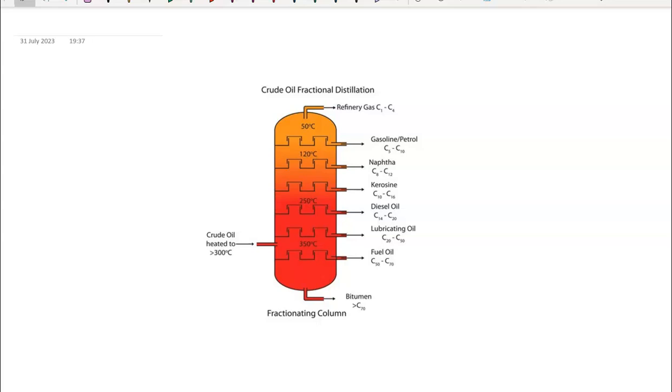At the bottom of the column is the largest fraction, C70, which is bitumen or road tarmac. This is why you need extremely high temperatures for this to break down. Extreme heat is something you rarely see in this country causing road tarmac to break down, but it can happen at really extreme temperatures.